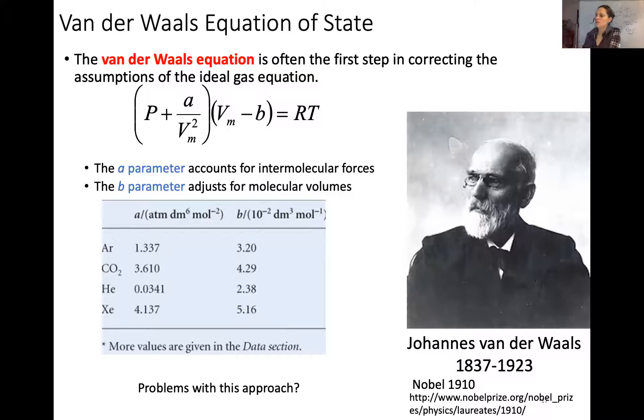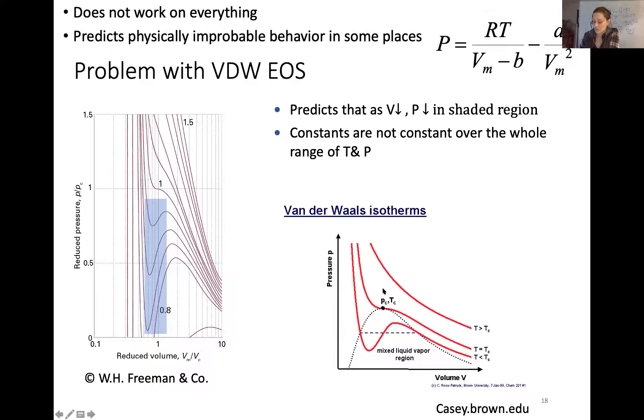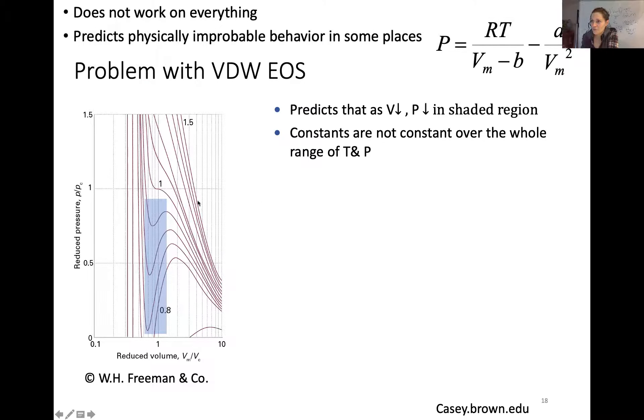The problem with the Van der Waals equation of state, this doesn't work with everything. Here we've got reduced pressure, and when you read Focus 1C, you will find the reduced pressures where you've got the pressure divided by the critical pressure. If you look at pressure versus volume, think back to Boyle's law, pressure versus volume should look like this. You should have that inverse proportionality. But as you get closer to this region, look at number one right here, that's the critical point.